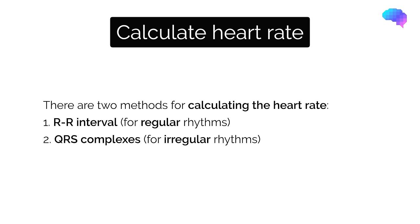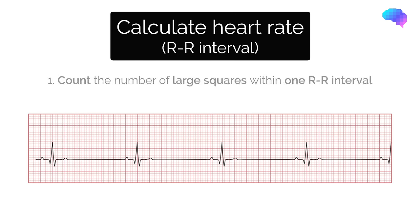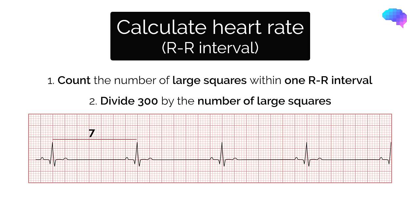Let's look at the first method using the RR interval. This method is suitable for regular rhythms. To use this method, count the number of large squares within one RR interval, then divide 300 by this number to calculate the heart rate. In this example, there are seven large squares. Therefore, the calculation is 300 divided by 7, which equals 48.